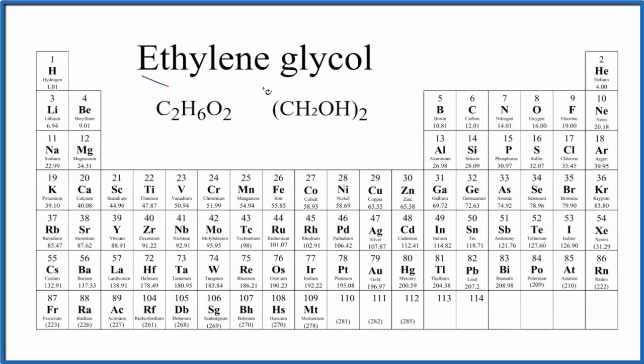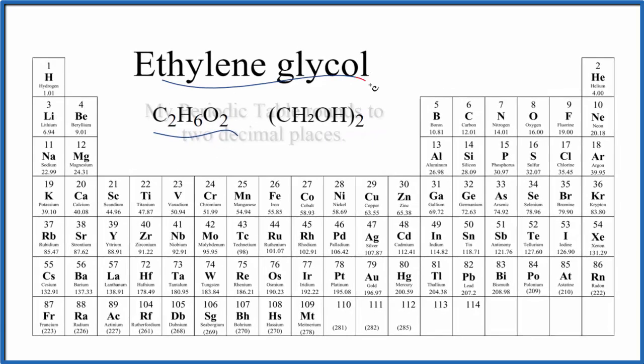Let's find the molar mass for ethylene glycol. There are two ways that we can write the molecular formula, this way and here. This has a little bit more information about the structure, but it has the same number of atoms as this one, just written a little bit differently. Let's use this one here to figure out the molar mass for ethylene glycol.